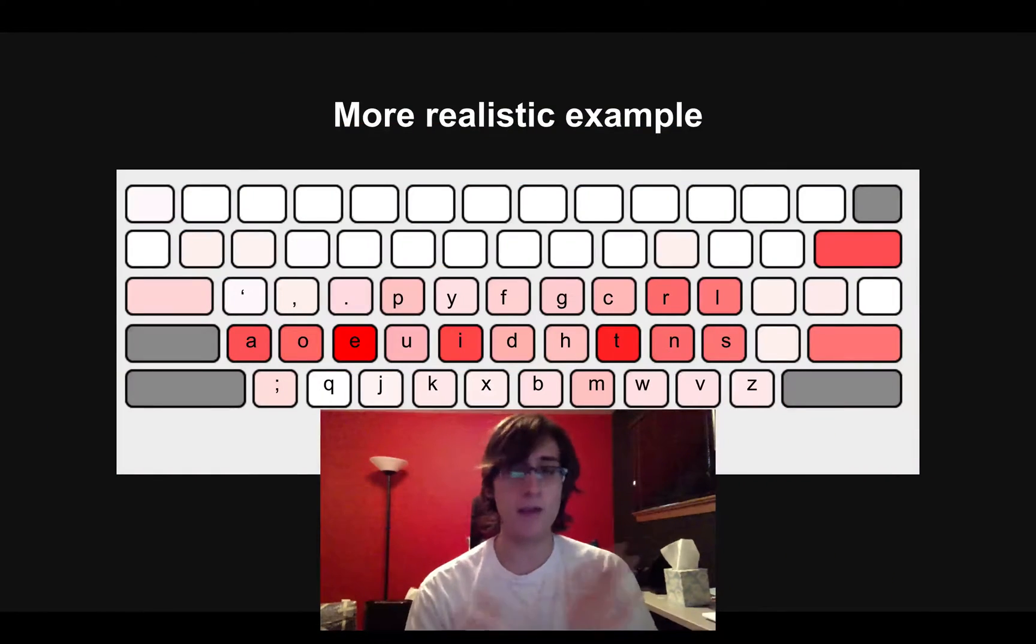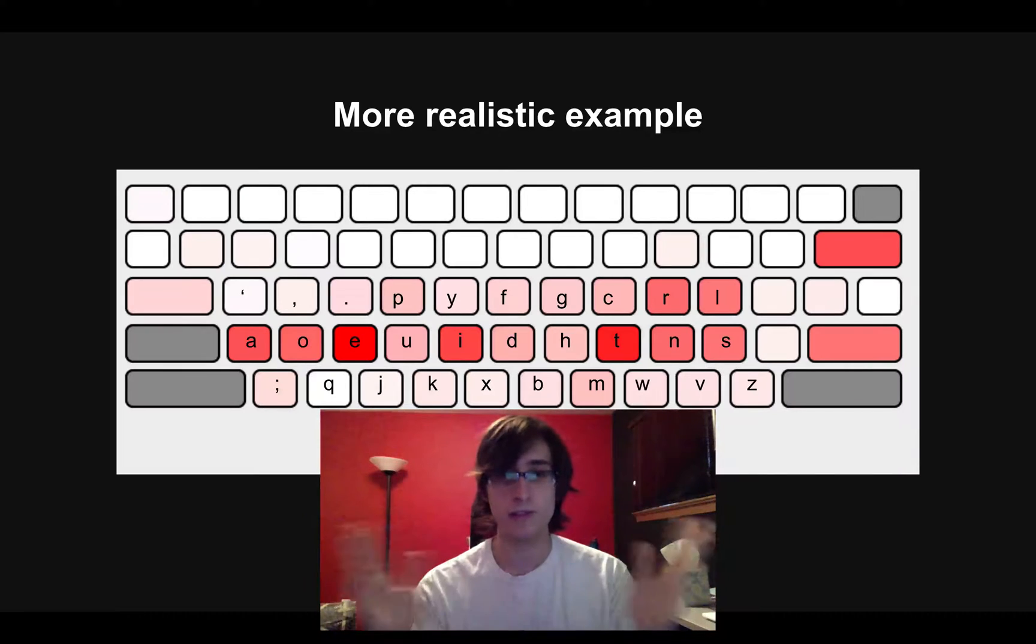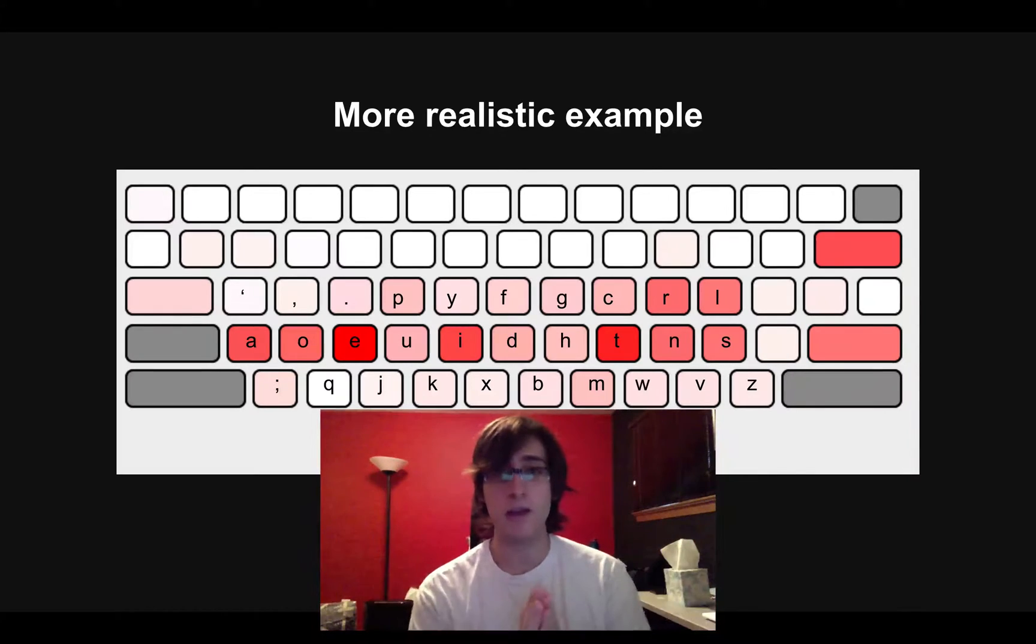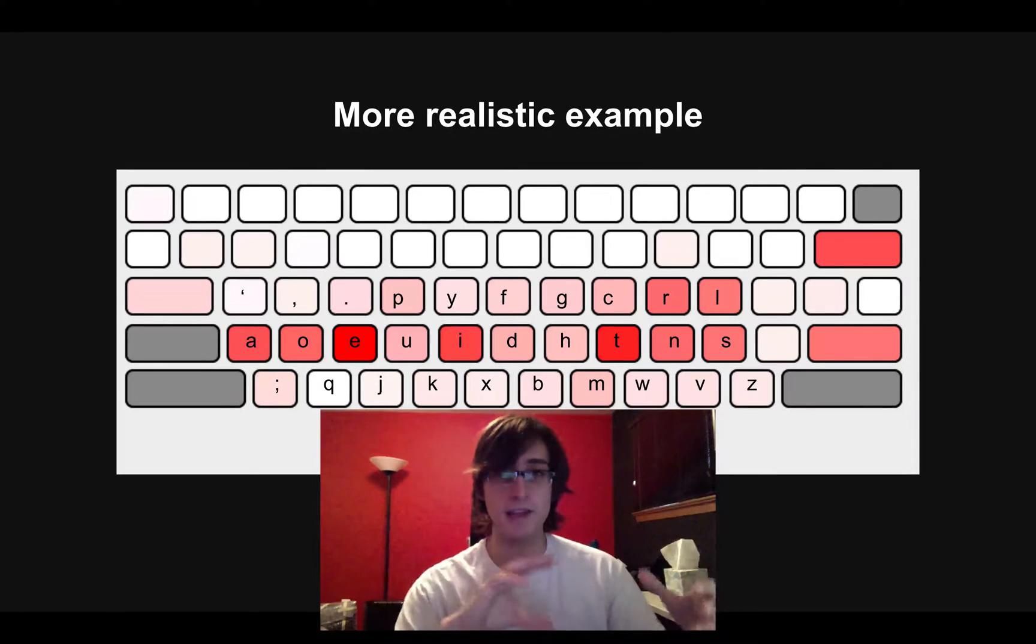So one very basic example is the English language. If I want to compress a bunch of text, I'm probably going to want to encode it in such a way that common letters like E and T and I are a lot smaller than the less frequent letters like Q. So Q might actually be pretty big, it might take up a lot of bits, but since I don't have to encode it very often, it's worth it because I can make things like E and T take up less space and they happen a lot more frequently.